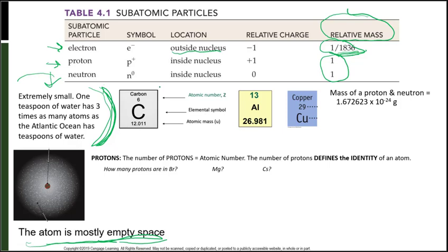Looking at the periodic table, let's look at carbon. This top number is its identifying number — that is its atomic number. The atomic number also tells me how many protons it has. We're also given its elemental symbol. Sometimes symbols are one letter, sometimes two; if two letters, the first is always capital and the second is lowercase. Down here we have our average atomic mass — notice it's a decimal. That is not its mass number; that's an average number.